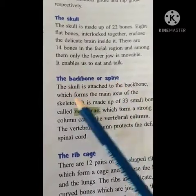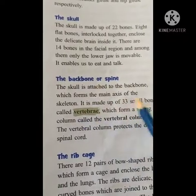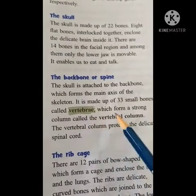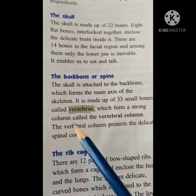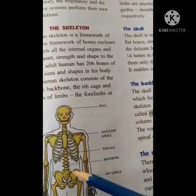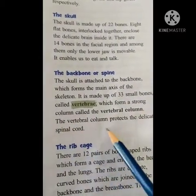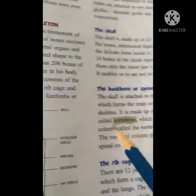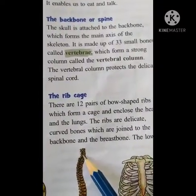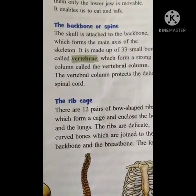The backbone or spine: the skull is attached to the backbone, which forms the main axis of the skeleton. It is made up of 33 bones called vertebrae, which form a strong column called the vertebral column. The vertebral column protects the delicate spinal cord. Here at the backbone it is present and it protects the delicate spinal cord.